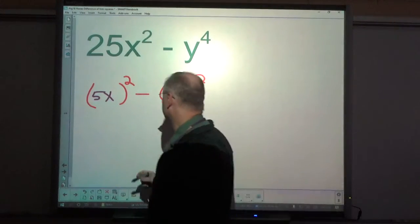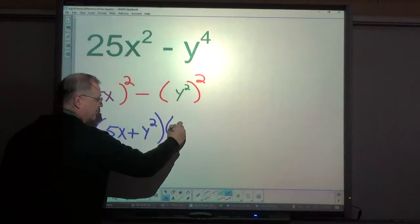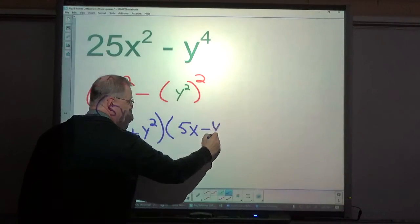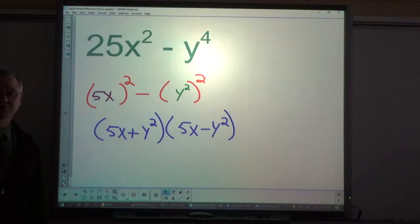All right, my answer here: 5x plus y squared, 5x minus y squared. And that's all there is to the difference of two squares.